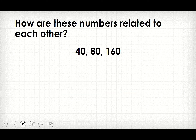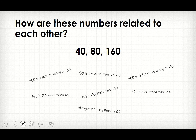First of all, how are these numbers related to each other? You may pause this video and take some time to think. You may say 160 is twice as many as 80, or 80 is twice as many as 40, or 160 is four times as many as 40. All of this will be true. These are the relations that you can see between each of these numbers.